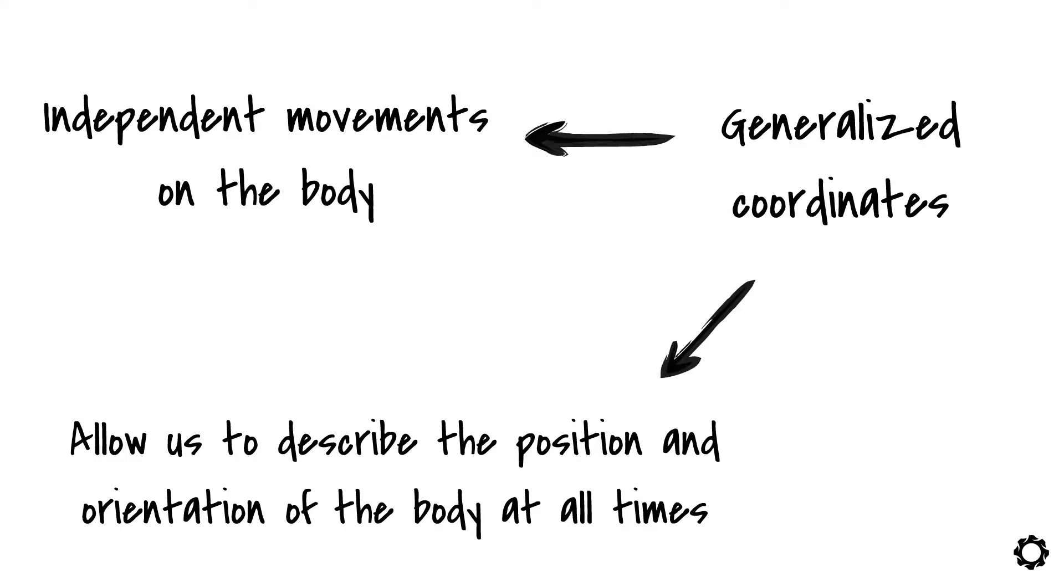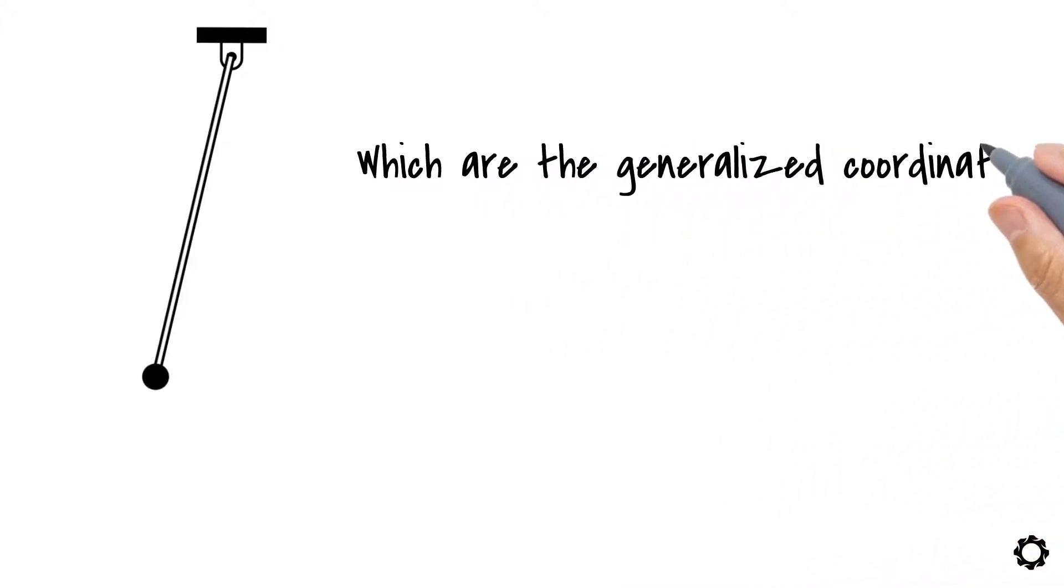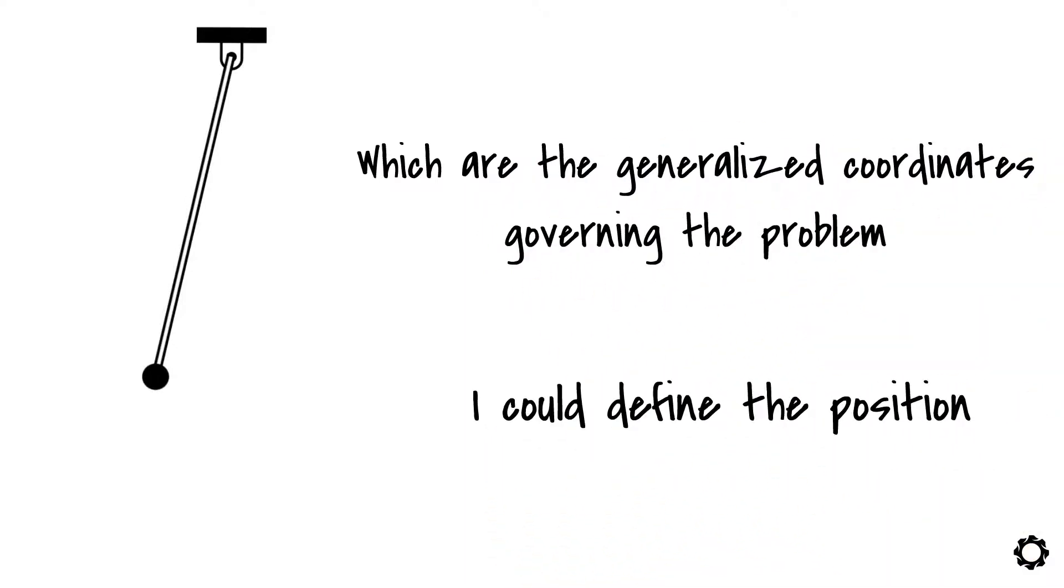You also notice that for a one-body example, such as a simple pendulum, it might be pretty simple to say which are the generalized coordinates governing the problem. In this case, I could define the position of the pendulum just by knowing the orientation angle, theta.